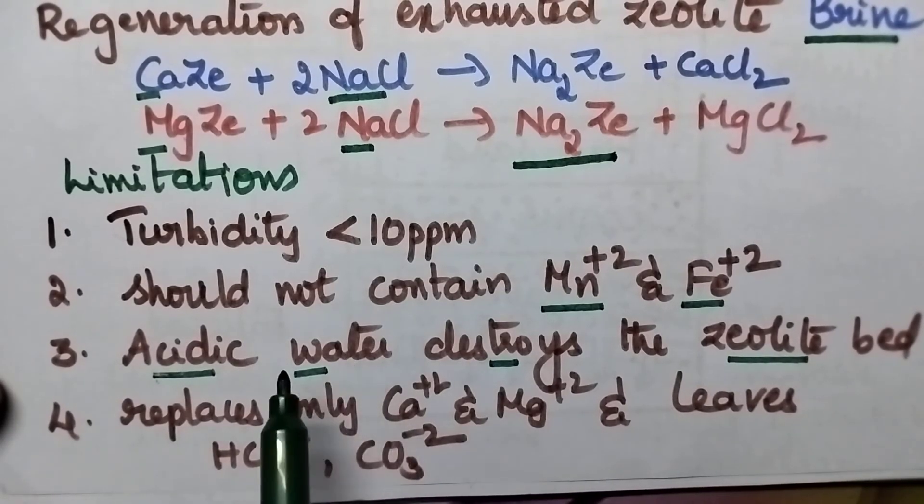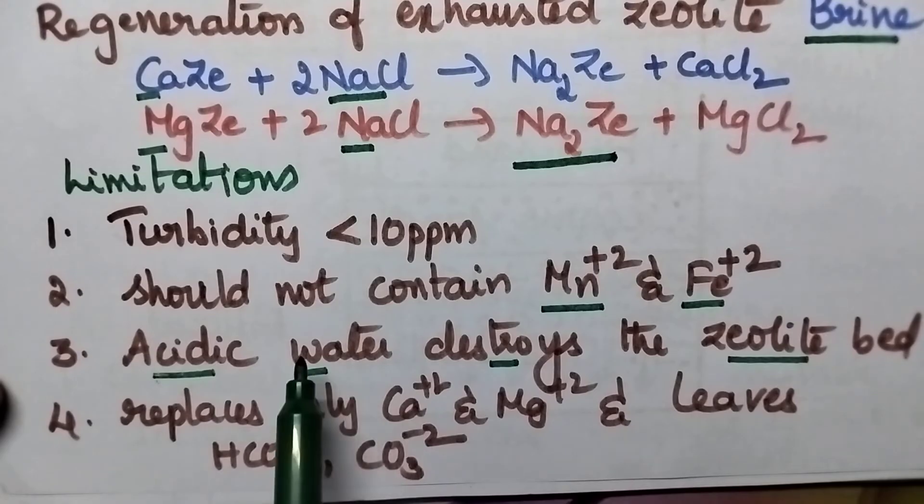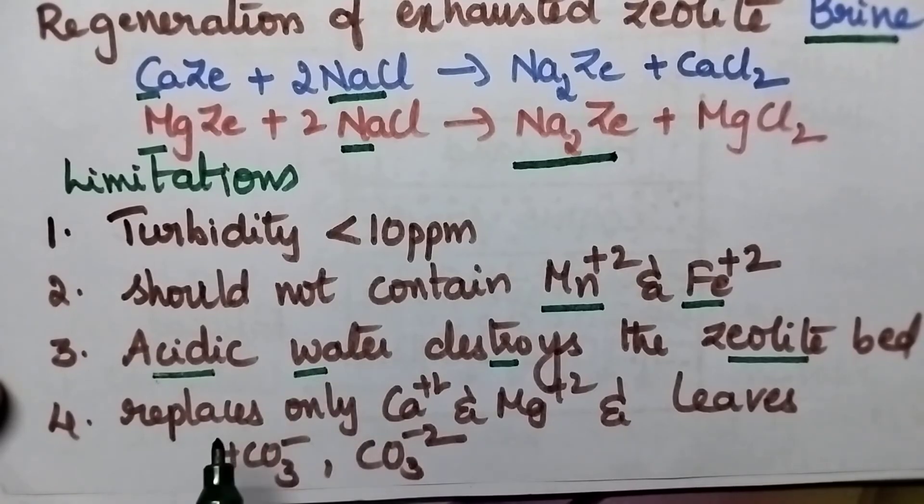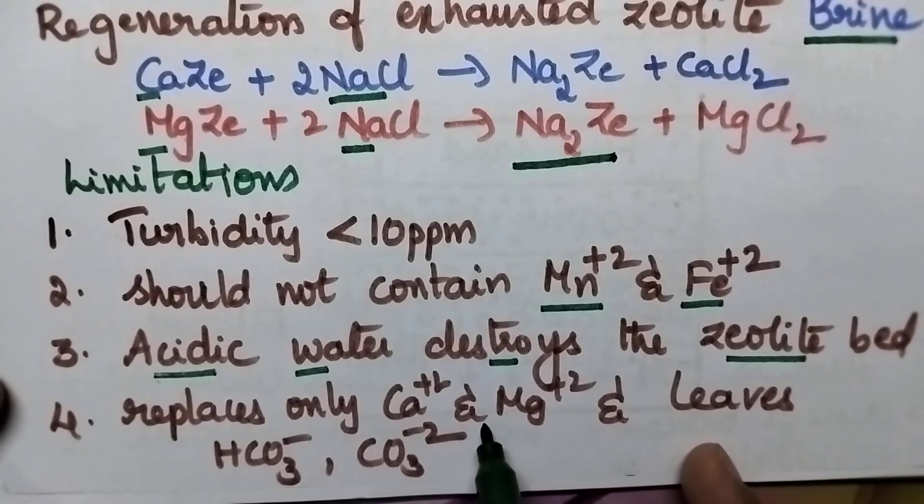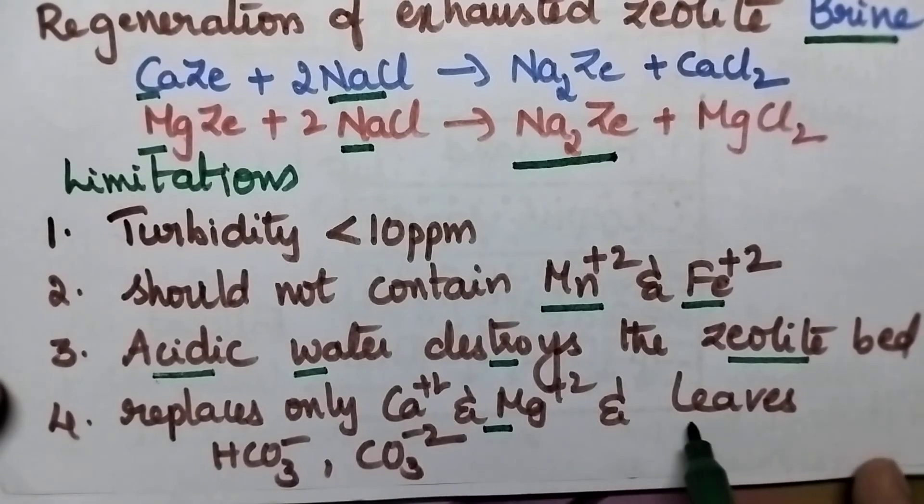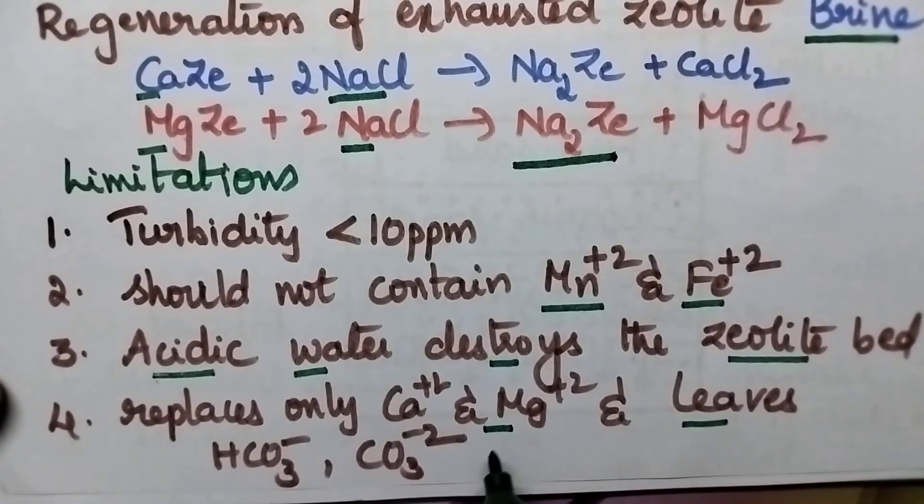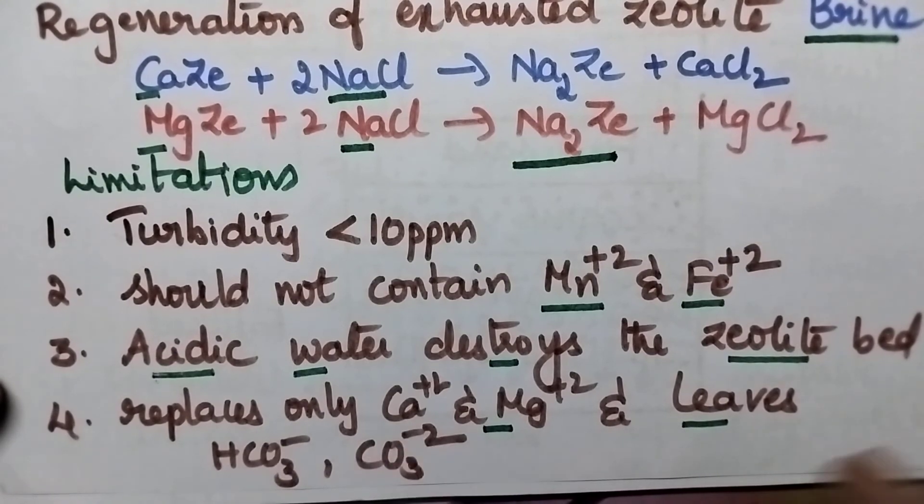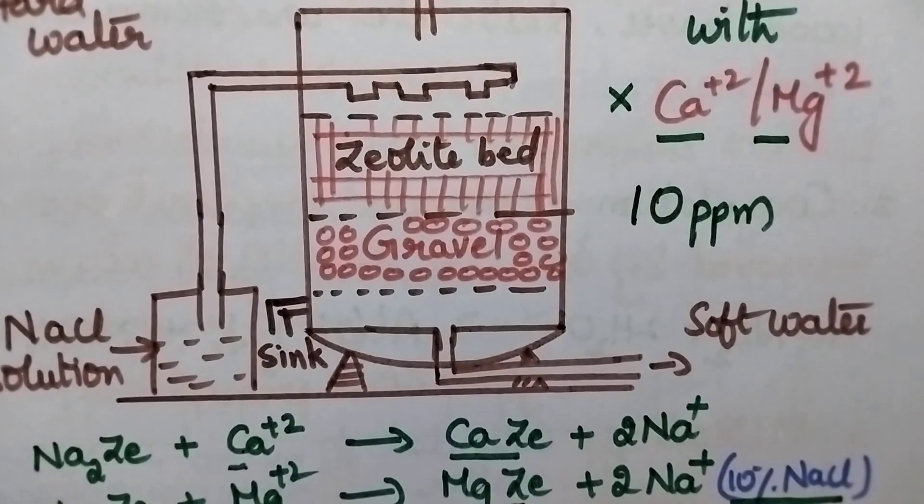So for the treatment of acidic water zeolite method is not suitable. At the same time this method can replace only hardness producing cations and leaves anions as such. Coming to the advantages, by this method the hardness can be removed up to 10 ppm.